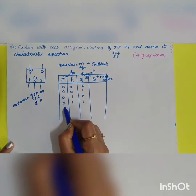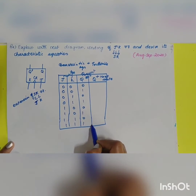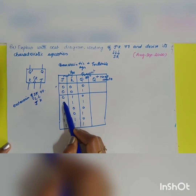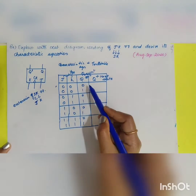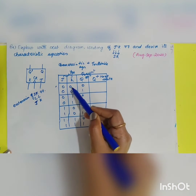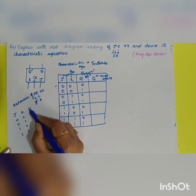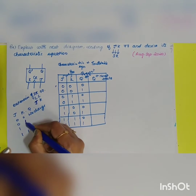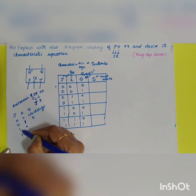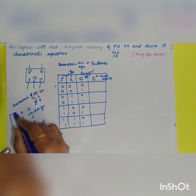Writing out the combinations: for each value of J and K, the present state Q can be 0 or 1. So we get combinations: 00, 01, 10, 11 for JK, each with Q=0 and Q=1. When J=0 K=0, there is no change. When K=1 (reset), Q=0. When J=1 (set), Q=1. When J=1 K=1, it toggles.